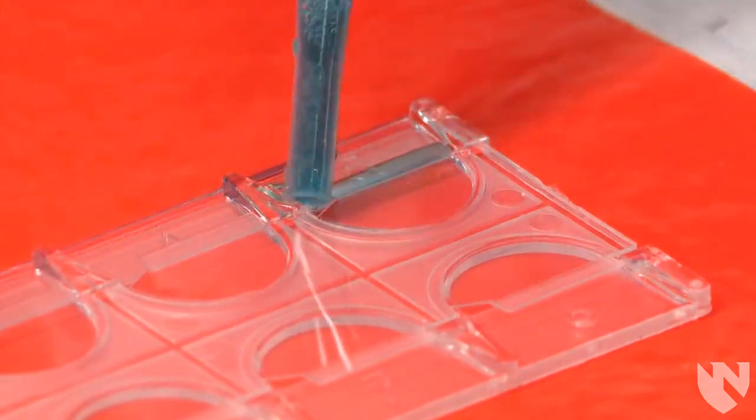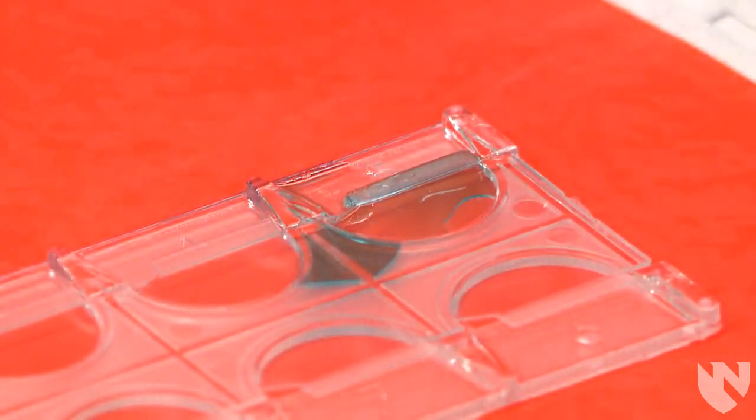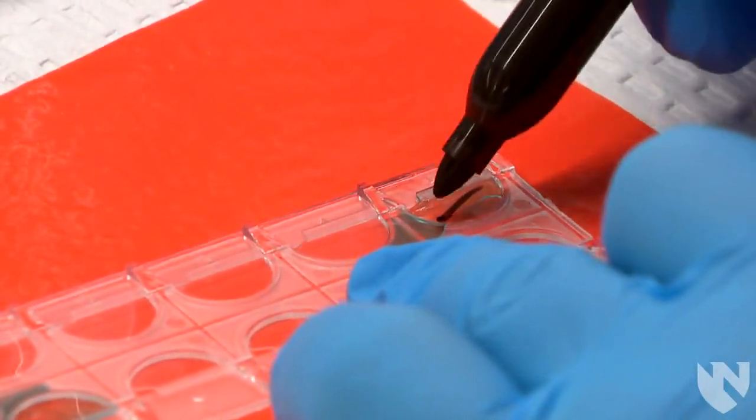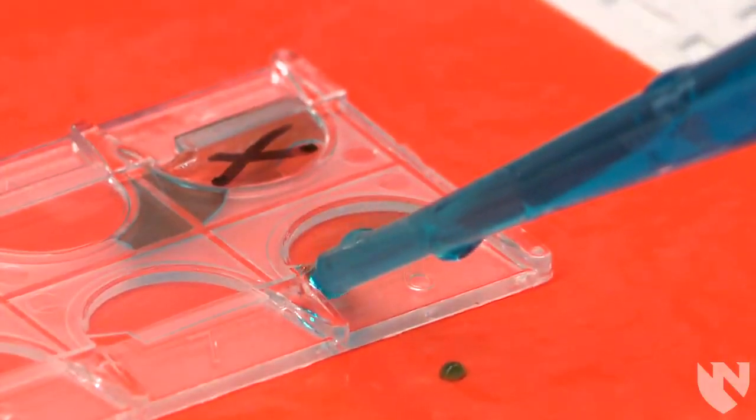If we get any bubbles in our well, we cannot use that well because we no longer have the standardized amount of urine. We would then use a marker and either make a slash or an X to indicate that well cannot be used. Next, we would load the sample into a new well.